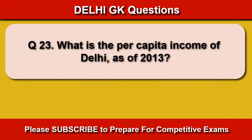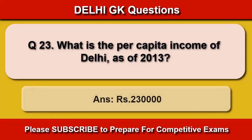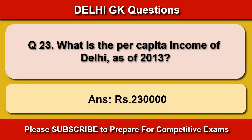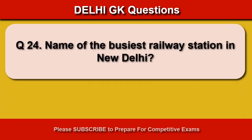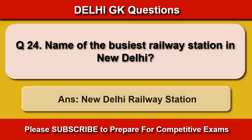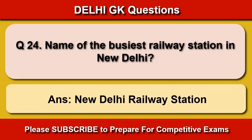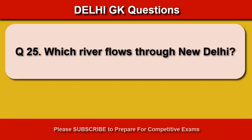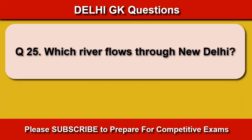What is the per capita income of Delhi as of 2013? Rupees 2 lakhs 30,000. Name the busiest railway station in New Delhi. New Delhi Railway Station.